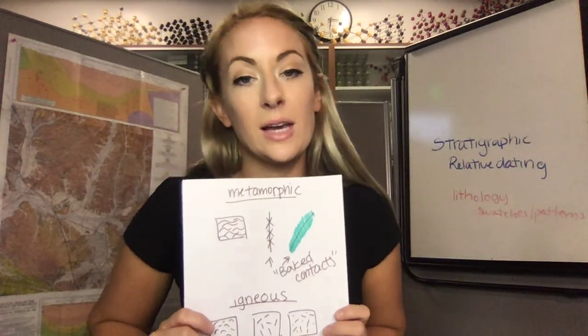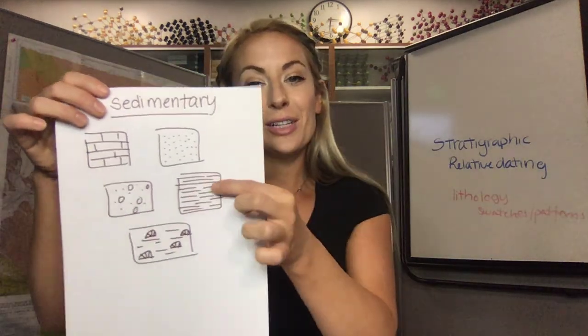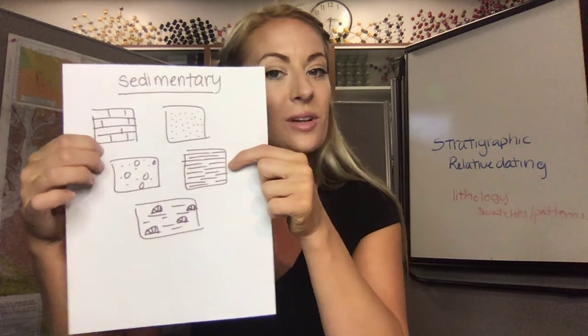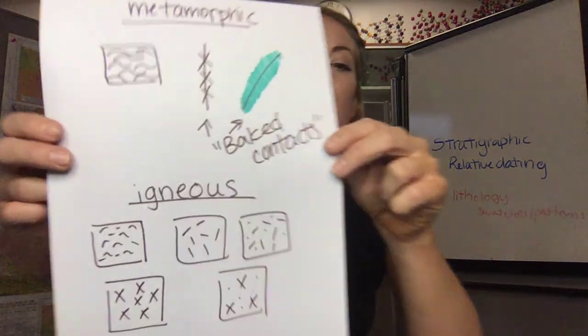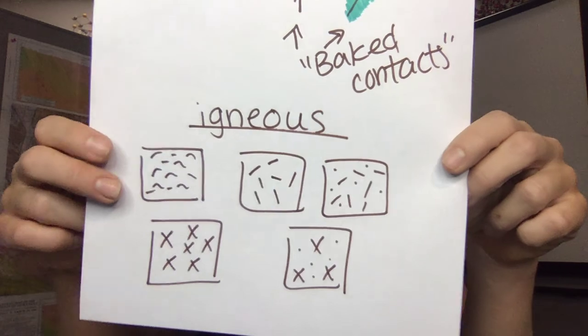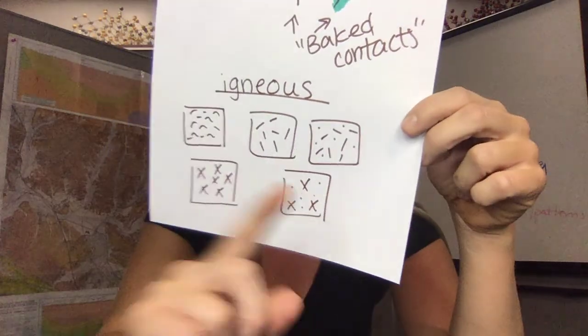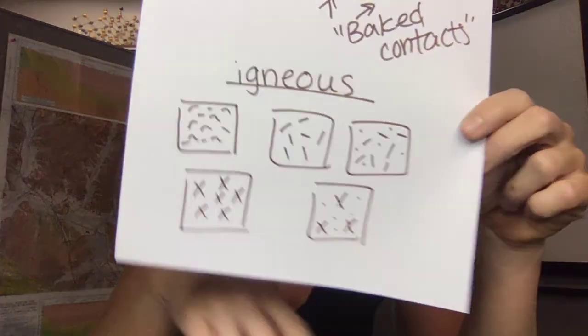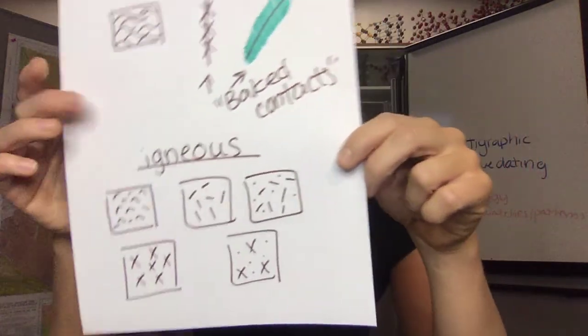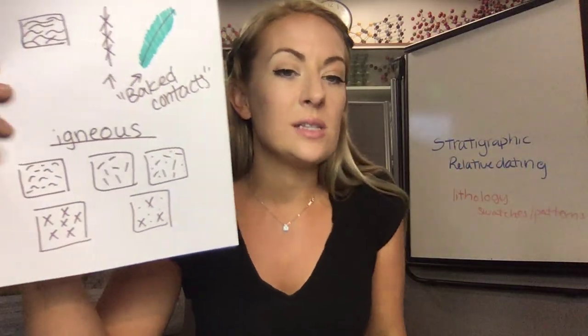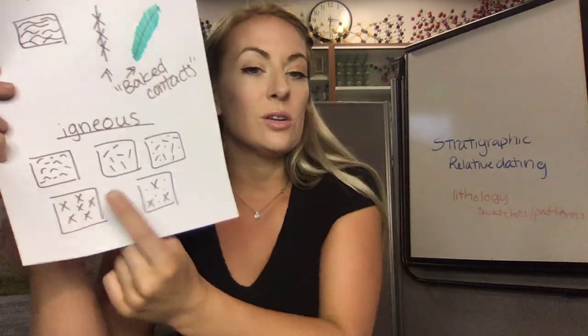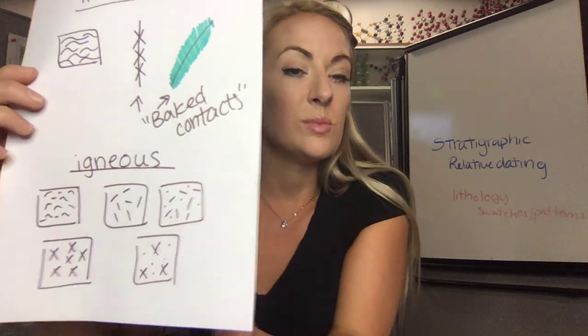The metamorphic and igneous lithologic keys aren't going to be as recognizable as the sedimentary ones. Igneous rocks instead exhibit more of a chaotic pattern where you have random squiggles — it looks like sprinkles, sprinkles and dots, X's, X's and dots. What these are meant to represent would be the crystals that you find in igneous material.